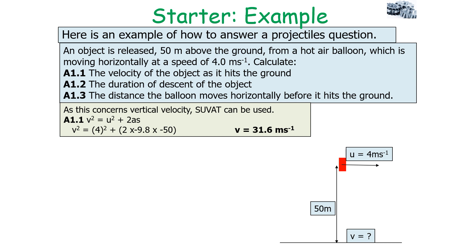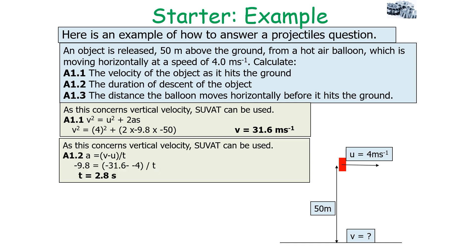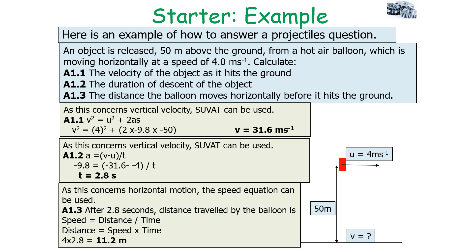This gives v = 31.6 m/s for the vertical velocity on impact. For the duration of descent, still using SUVAT for vertical motion: a = (v − u) ÷ t. Substituting all values in, remembering the negative signs, gives t = 2.8 seconds. For the horizontal distance, since this concerns horizontal motion, we use the speed equation: distance = speed × time = 4 × 2.8 = 11.2 metres. Note how the time calculated from the vertical equations is substituted directly into the horizontal equation.